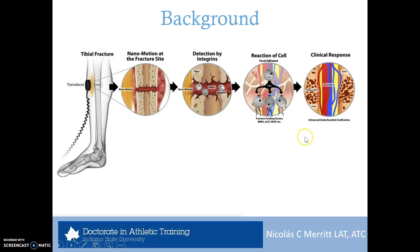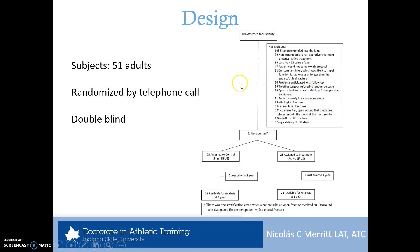In terms of study design, there were 51 adults found through the study. The specific number of participants was obtained using a 24-hour toll-free remote telephone randomization system that ensured concealment from both sides, so everyone was unknown to each other in terms of anonymity.